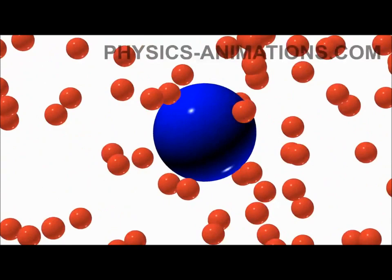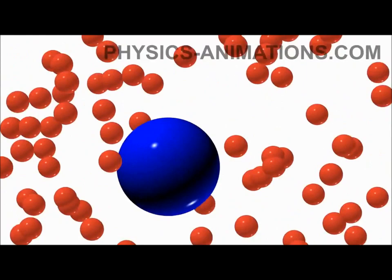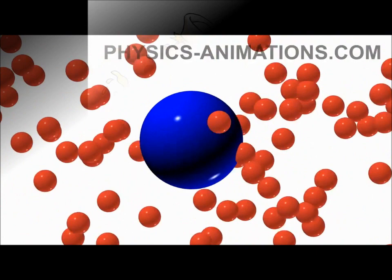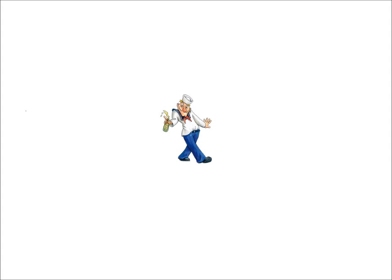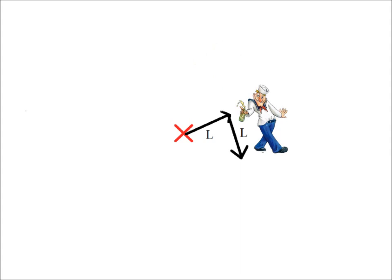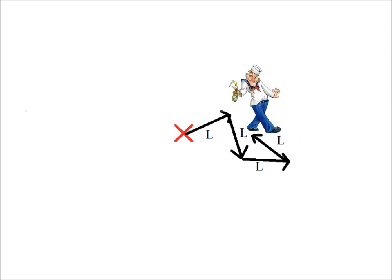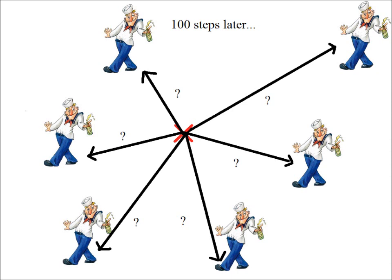Now that we have an understanding of the physics, let's examine how to quantify the trajectories. To this end, we will explore something called a random walk. Imagine a drunken sailor standing outside. Every second, he takes one step of length L, but he is so inebriated that the direction he moves in is chosen at random. The question is, after 100 steps, how far away will he end up from his starting location? As you can probably imagine, this problem is very similar to the problem of Brownian motion, except that we are taking one step every second instead of continuously moving.